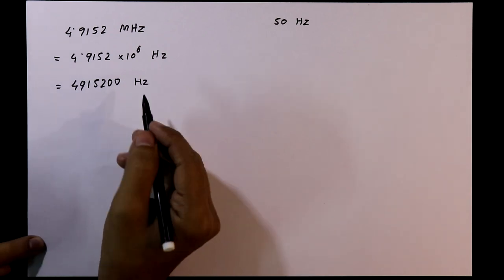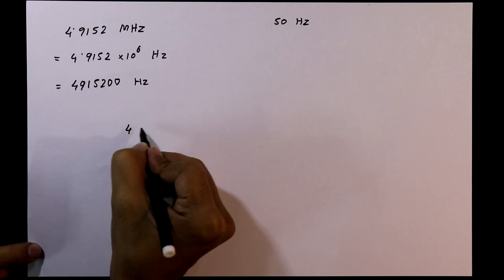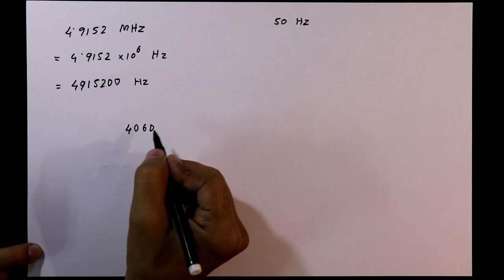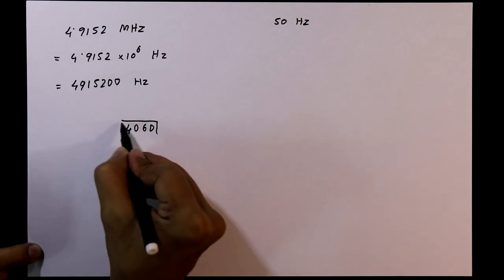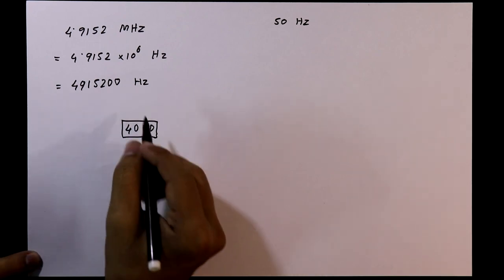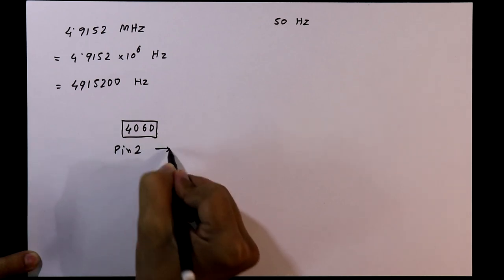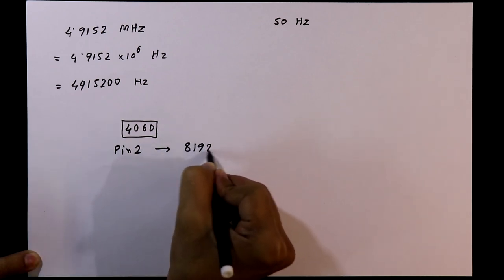In the first video of this series, I explained about IC 4060, a frequency divider IC. For this project, we will use pin number 2 of this IC. This pin number 2 can divide by 8192.